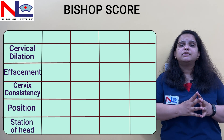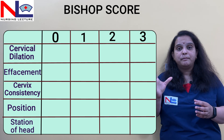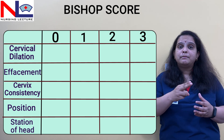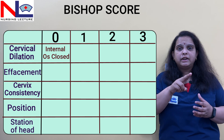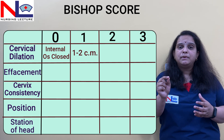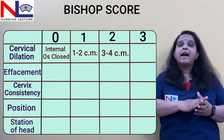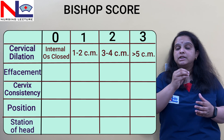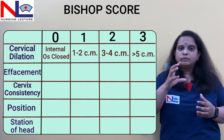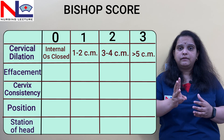Each parameter is scored from 0 to 3, where 0 is the least favorable and 3 is the best outcome. The first parameter is cervical dilatation. If on PV examination the internal os is closed, we score 0. If dilated 1 to 2 centimeters, we score 1. If 3 to 4 centimeters, we score 2. For more than 5 centimeters dilatation, we score 3 — meaning the cervix is well dilated and the maximum score of 3 is favorable.